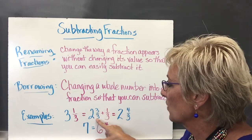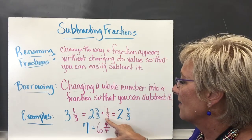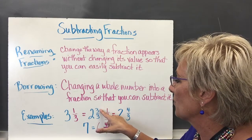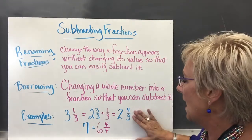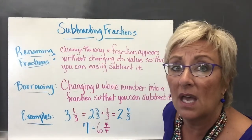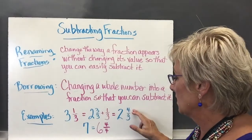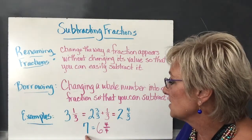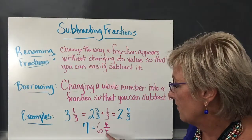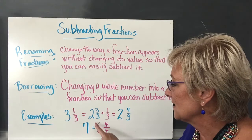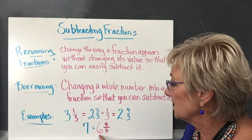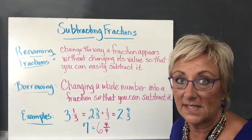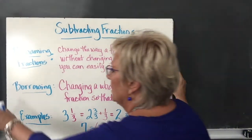Borrowing: you borrow in subtracting whole numbers, and here borrowing means changing a whole number into a fraction so you can subtract. Taking the 3 — now renamed as 2 and 3/3 — and with like denominators, I call it 2 with common denominator 3, and 3 plus 1 equals 4, giving 2 and 4/3. I'll leave it in that improper fraction form for subtracting. Similarly, if 4 is my common denominator, I can change a whole number 7 into 6 and 4/4, because 4/4 equals 1. So 6 and 4/4 is the same thing as 7.